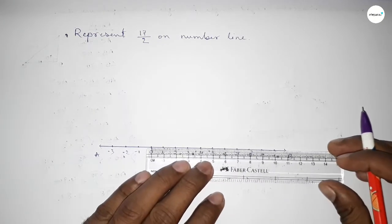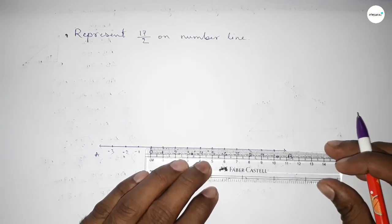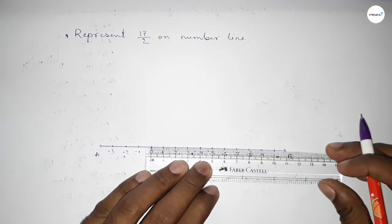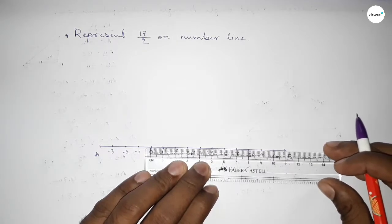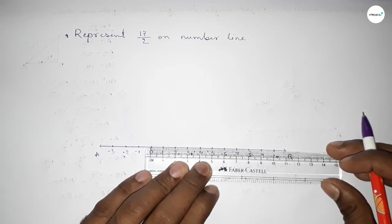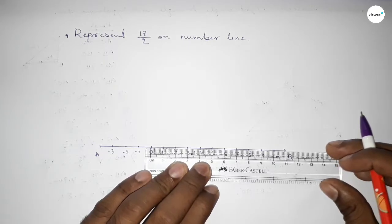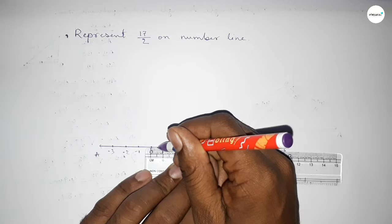Now we have to divide the length between zero to one, one to two, and so on. So we have to take half of each length of two numbers. Now taking first half of zero and one, so this is half.